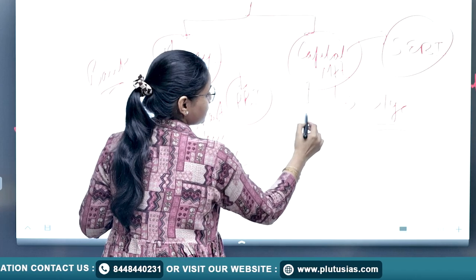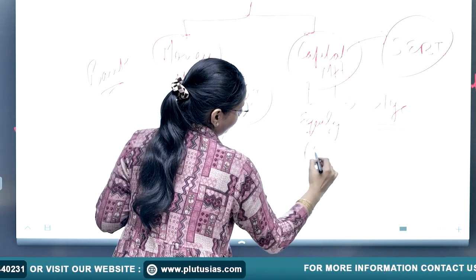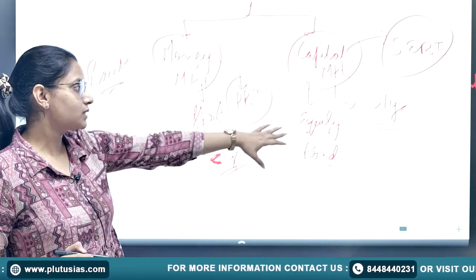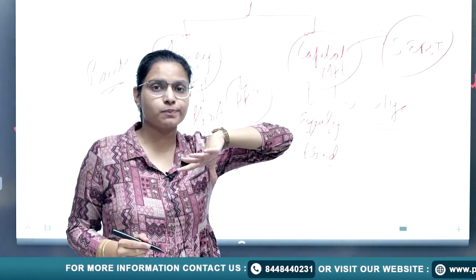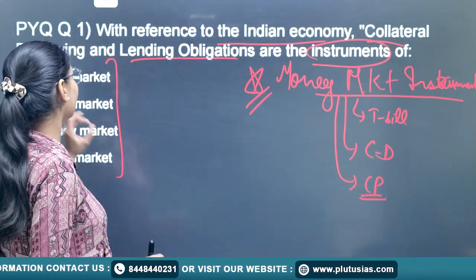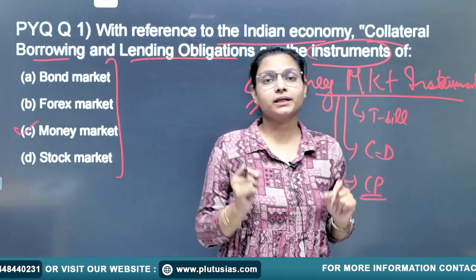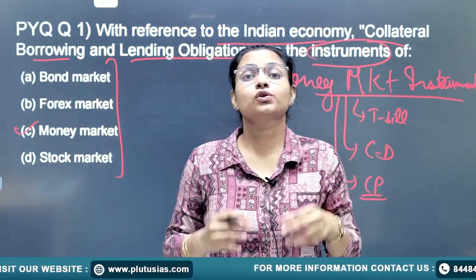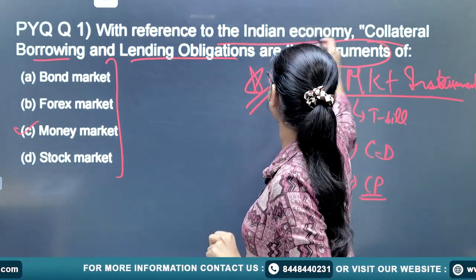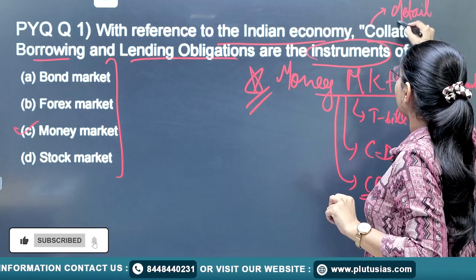In previous years they have asked about equity and bonds. In 2022 they asked about capital expenditure versus revenue expenditure. The learning from this question is that you need to read about money market instruments and capital market instruments — at least know their names and basic features. Next time they can ask in detail.